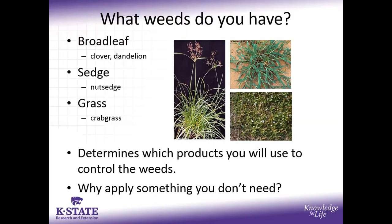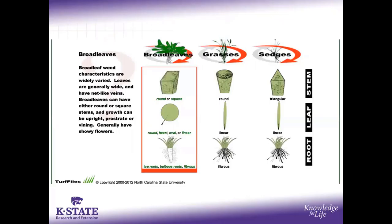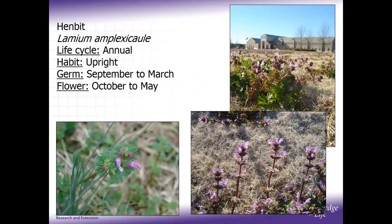Now that we know herbicide nomenclature, let's go through the different types of weeds. Broadleaf weeds have rounder or square stems — mint family has square stems, for example. They have big broad leaves in all different shapes, but the veins are networked, not parallel. The root system can be fibrous — just a bunch of roots — bulbous like a bulb, or a taproot like a dandelion. That's why dandelions are so hard to pull up: if you don't get that taproot out, it comes right back.